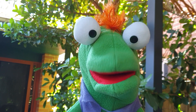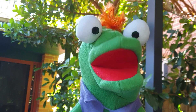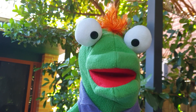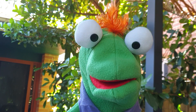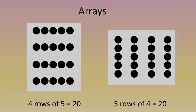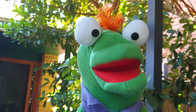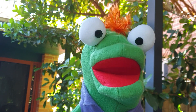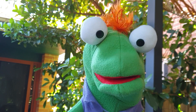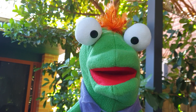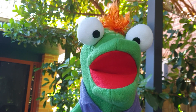You can use an array to visualize multiplication, so four times five would look something like this. Four times five equals twenty, and also five times four equals twenty. If you look at the array the other way around, you will see five rows of four.